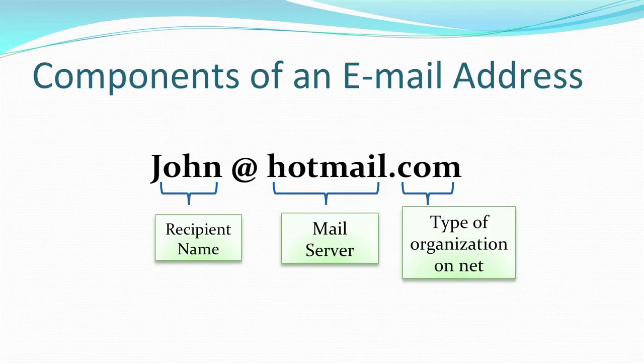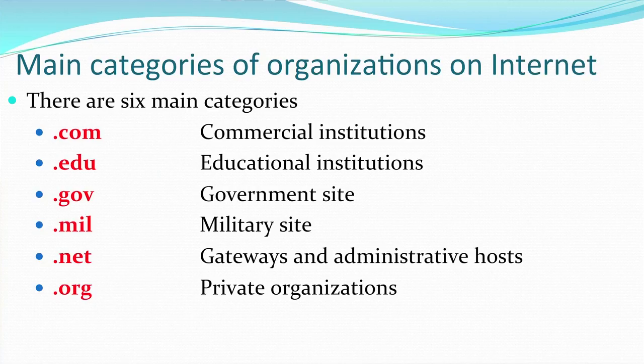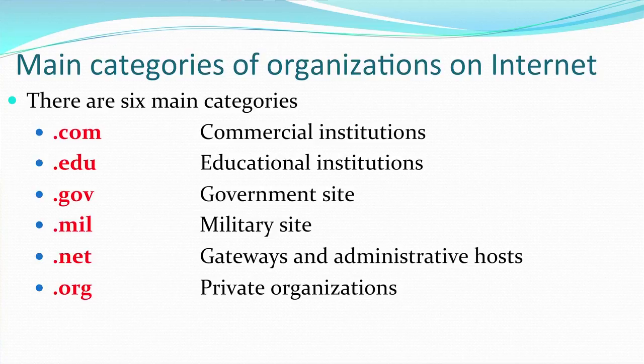The third and final part of an email address specifies the type of organization the service provider belongs to. The various categories are: .com for commercial institutions, .edu for educational institutions, .gov for government sites, .mil for military sites, .net for gateways or administrative hosts of networks, and .org for private organizations. The last section of the email changes depending on the category the mail service falls in.